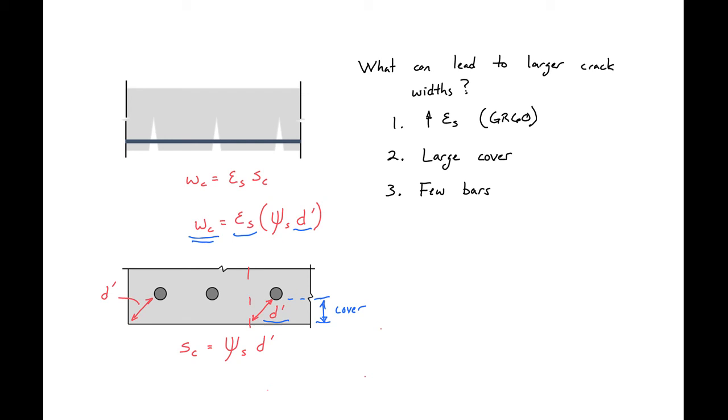The last major thing that will lead to larger cracks is if we have only a few bars that are resisting our cracking. If we have fewer bars, that's going to affect our spacing. And if we have a larger spacing, we'll have a larger d prime, which will once again lead to larger cracking. We'll see that we'll have spacing limits between our longitudinal bars or bars resisting cracking, and that will help us to minimize our crack widths.